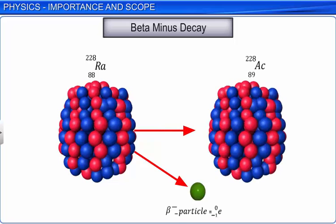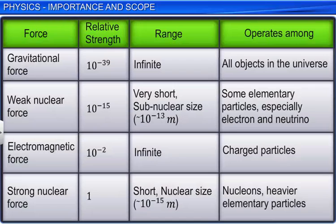In beta decay, the nucleus emits an electron and an uncharged particle called neutrino. The table shows the relative strength and range of all the four fundamental forces of nature.